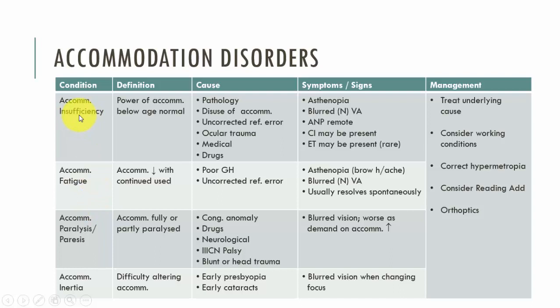For insufficiency, we have the power of accommodation being below age normal. Whereas with fatigue, accommodation reduces with continued use — it may start off being age normal, but as the patient continues to utilise their accommodation, it reduces. With paralysis and paresis, we have either a fully or partly paralysed accommodation. Fully paralysed means paralysis; partly paralysed means paresis. This is different from insufficiency because with paralysis there is an innervational issue rather than accommodation simply being below normal.